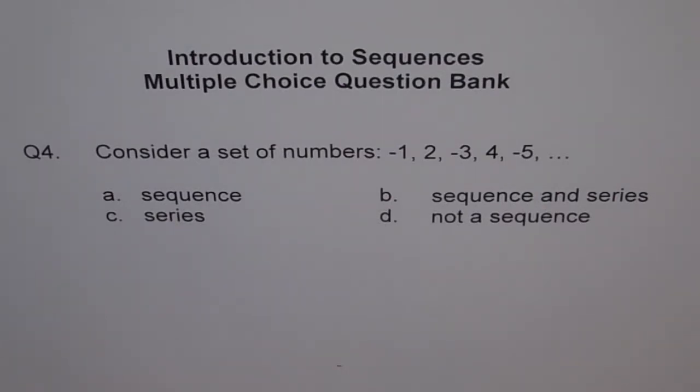Consider a set of numbers: -1, 2, -3, 4, -5. The choices are: Is it a sequence? Is it sequence and series? Series? Or not a sequence?